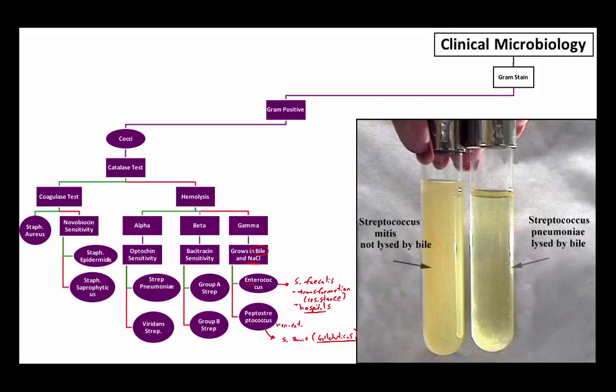The old way of remembering this bacteria is bovis in the blood, cancer in the colon. Because if you have strep bovis bacteremia or subacute bacterial endocarditis as a result of strep bovis, you would have to consider somebody for colorectal cancer. And that's really the only thing that it's associated with.